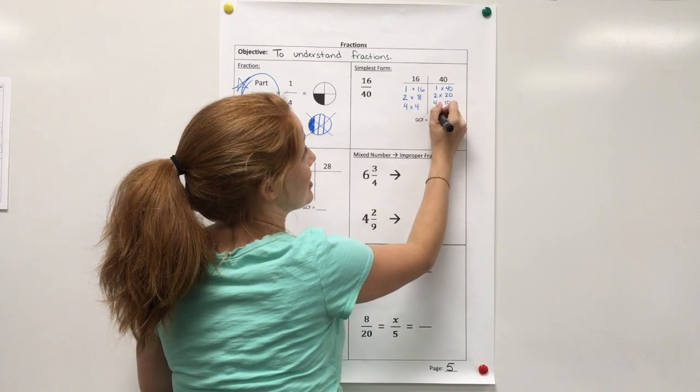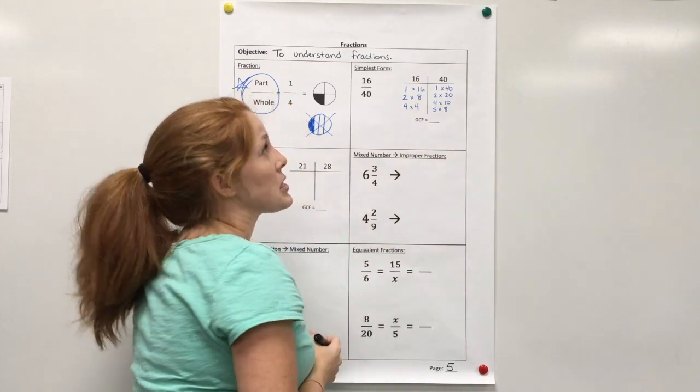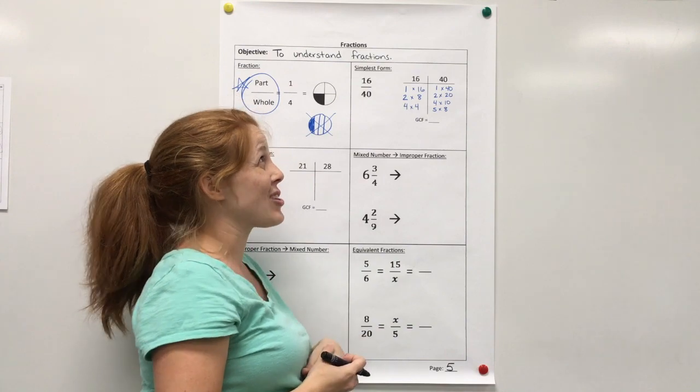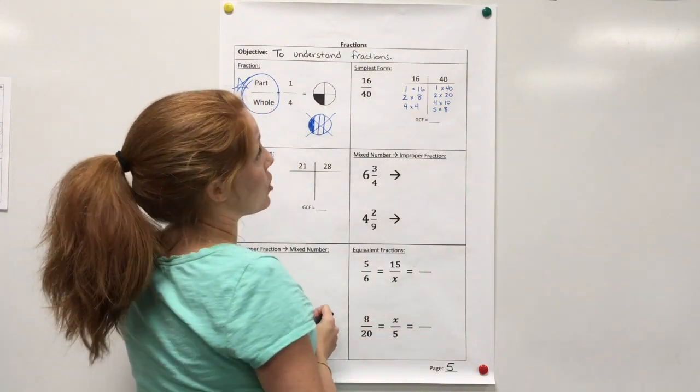I know 5 will work because it ends in a 0. And that's 5 times 8. 6 and 7 are not going to work because I know 6 times 7 is 42. And that's too close. So I'm done here.